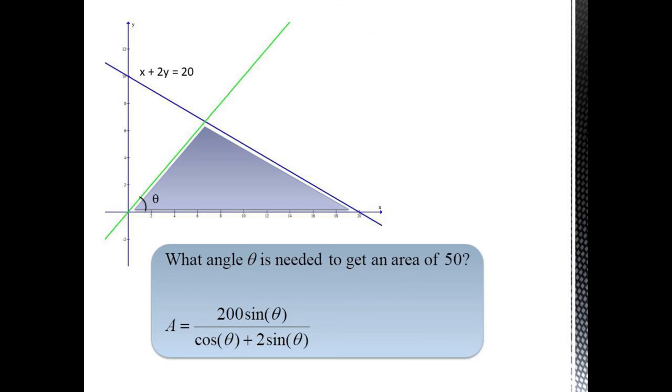In our final example, we have two lines. One has the equation x plus 2y equals 20, while the other goes through the origin and makes an angle theta with the x-axis. The area of the blue shaded triangular region depends on the angle theta, and a formula for the area is given below.